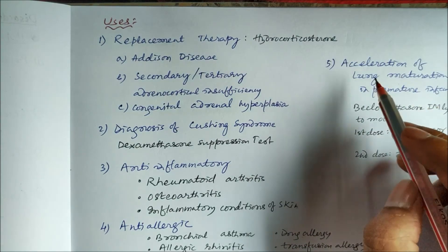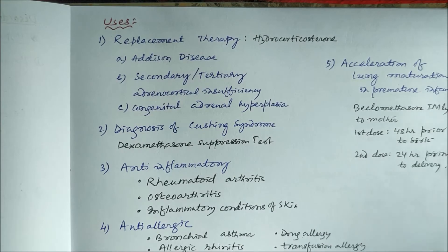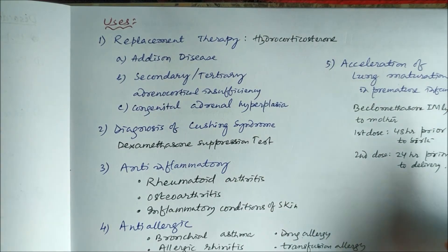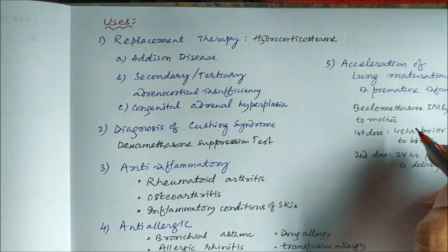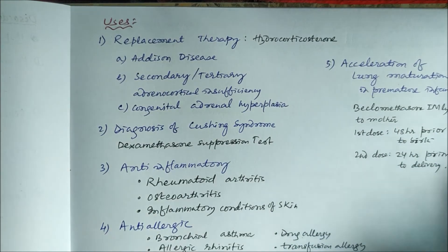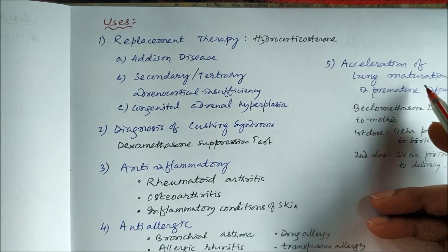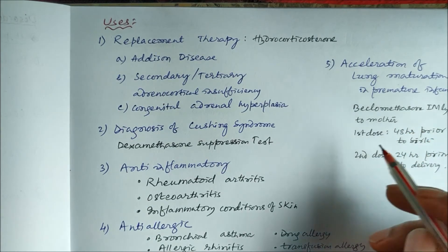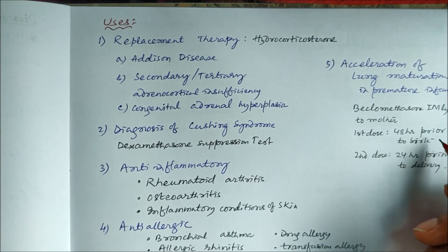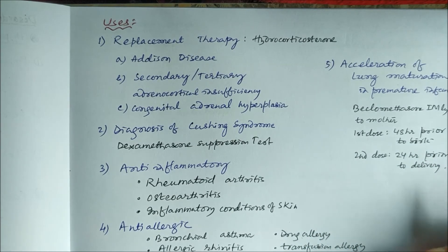Corticosteroids can also be used in premature infants to accelerate maturation of the lungs. Beclomethasone can be given intramuscularly to the mother — the first dose 48 hours prior to birth and the second dose 24 hours prior to delivery.